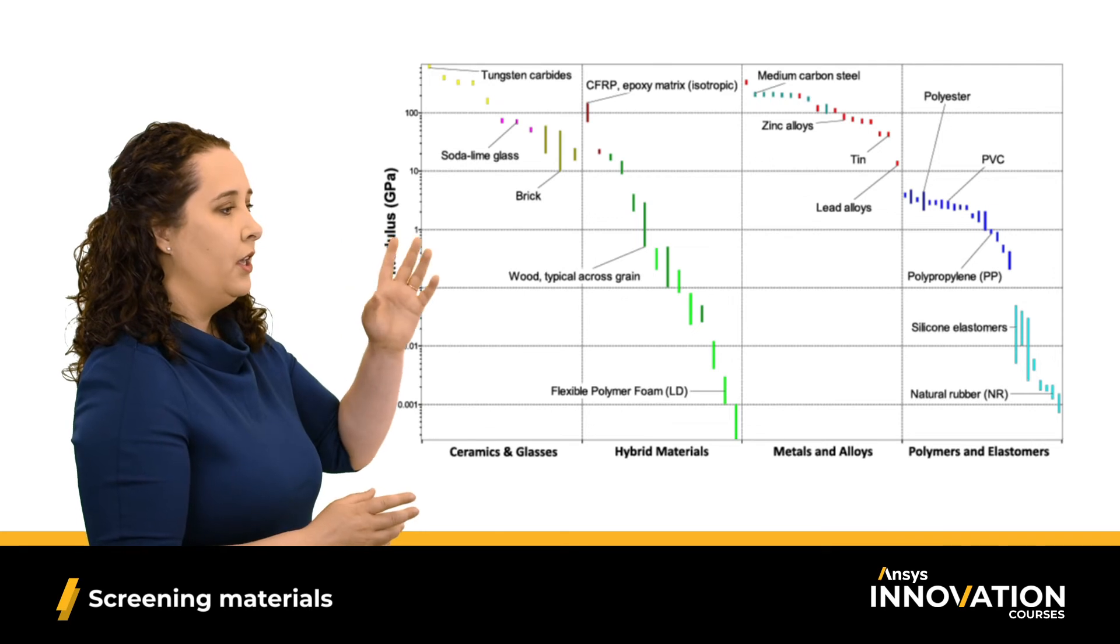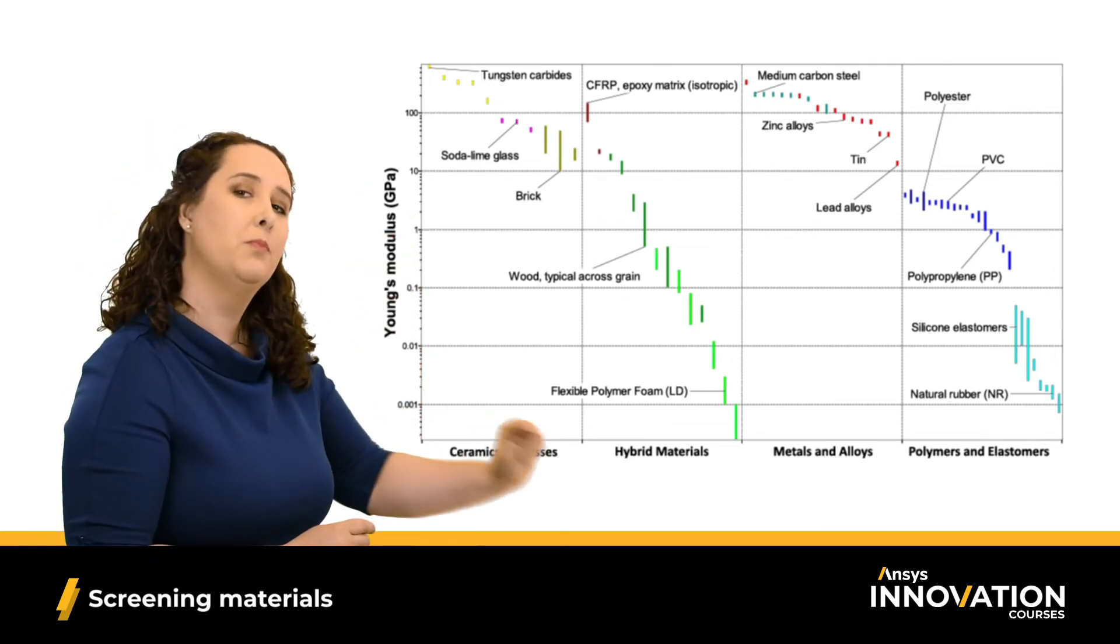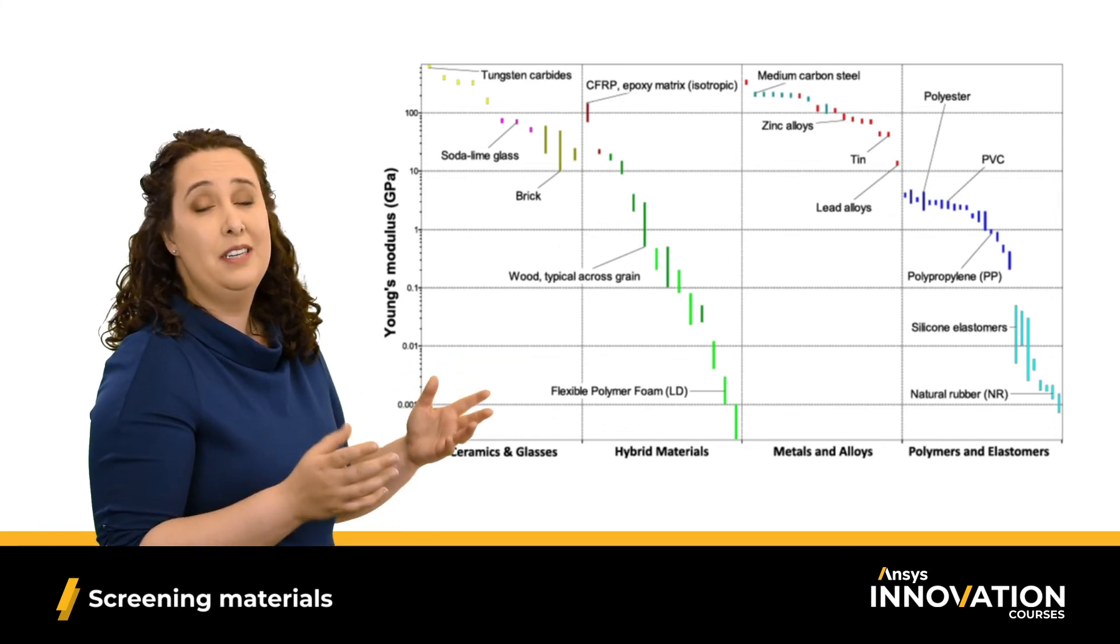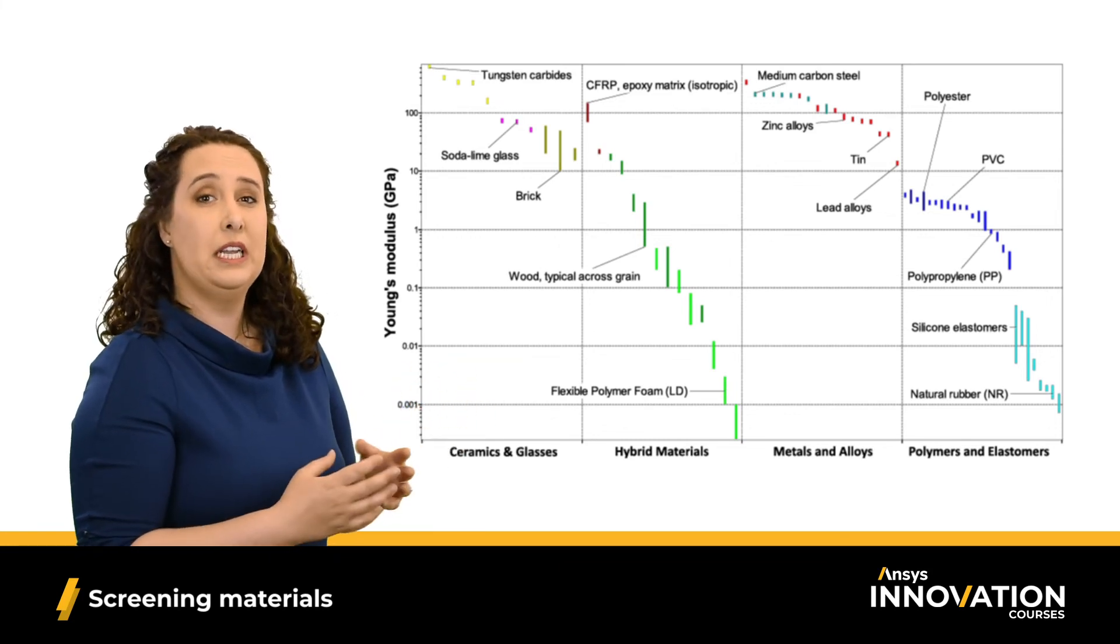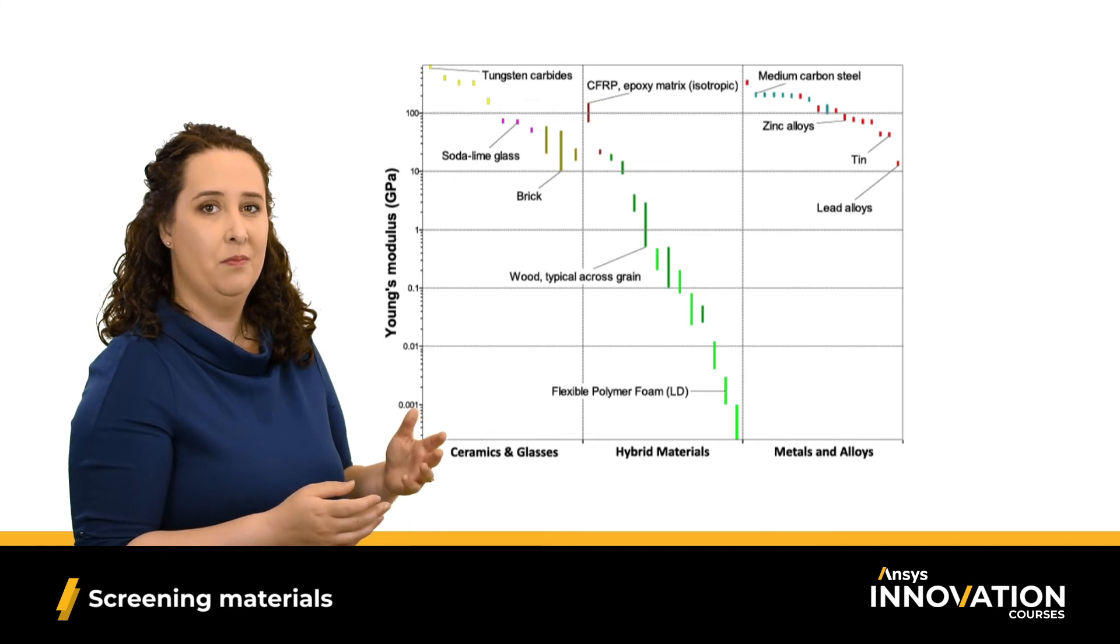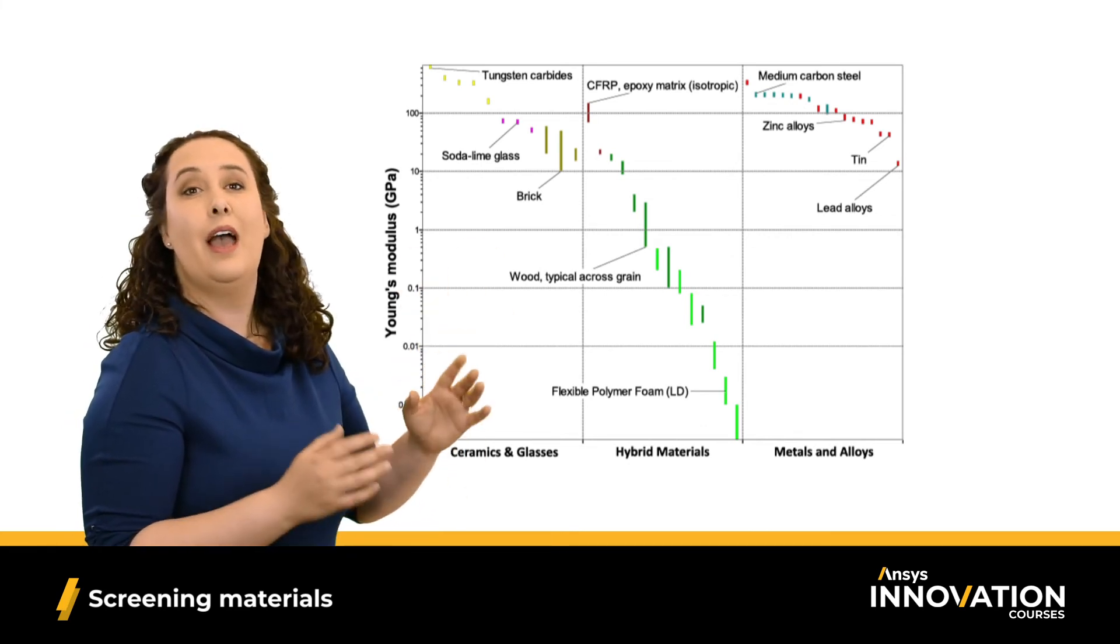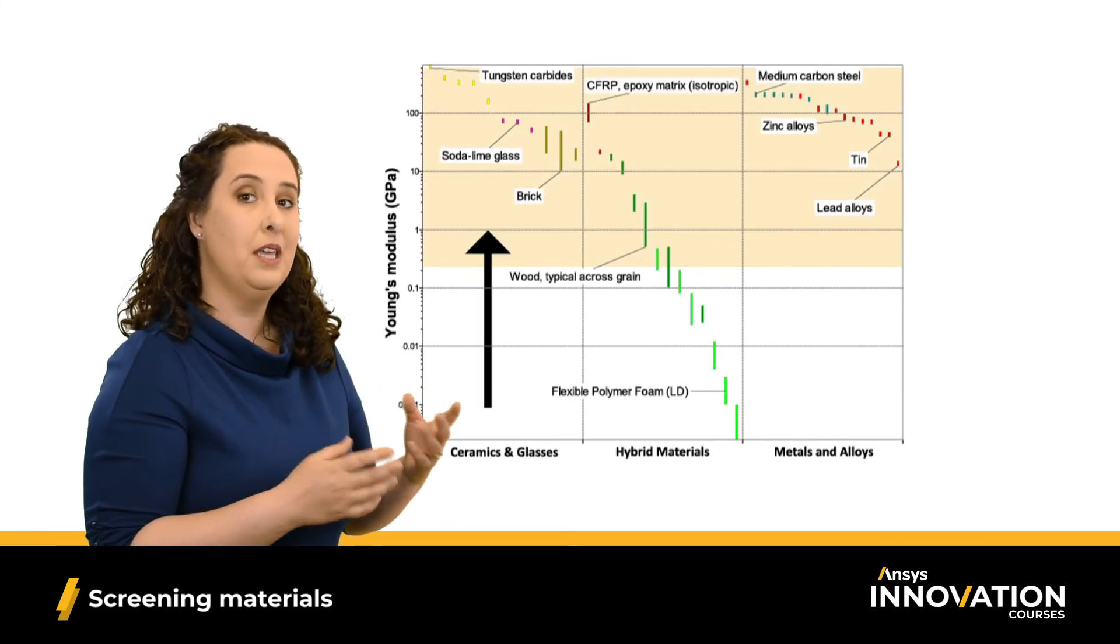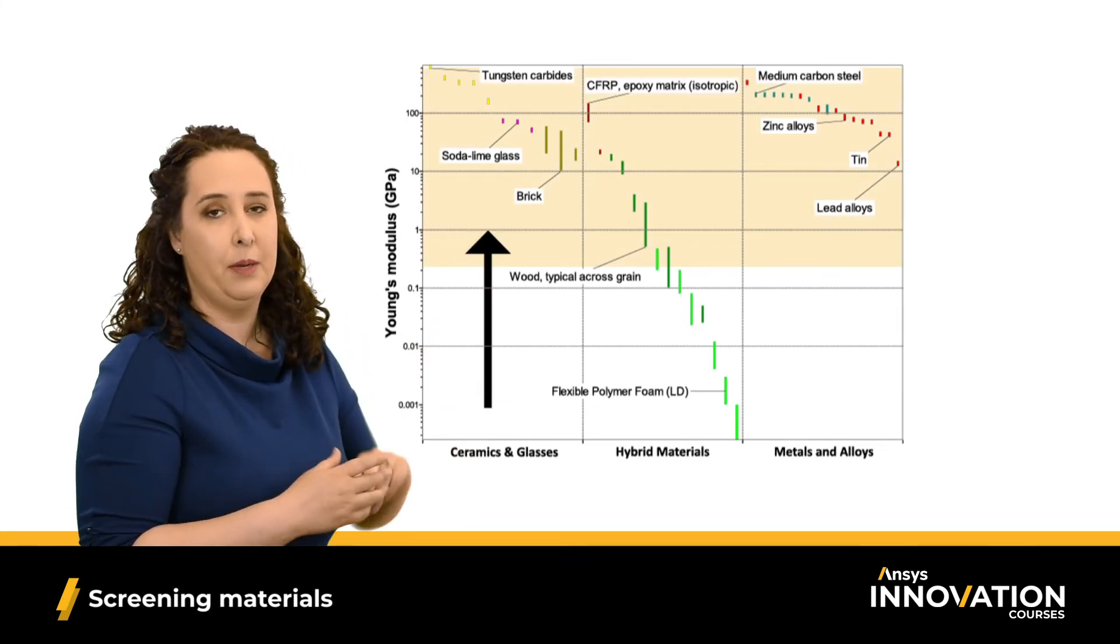So we can see this example in a bar chart. Here, I have a bar chart of yield strength on my y-axis, and I've split the x-axis based on material family. Based on my design criteria, I know that I don't need to consider polymers and elastomers, so I can just get rid of them. And now I can focus on ranking my materials that are left over to maximize my yield strength. So I'm focusing up here in my chart.